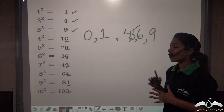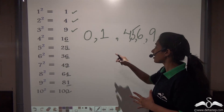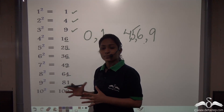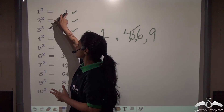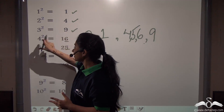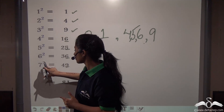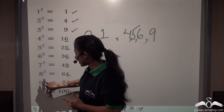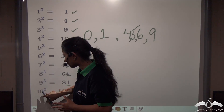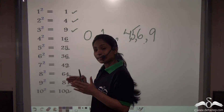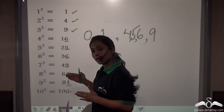We can say that all the square numbers, if they are perfect squares, they will have these digits only in their units digit. How can I say that? You know that maths has numbers 0 to 9, and all other numbers are combinations of these. So 1² = 1, 2² = 4, 3² = 9, 4² = 16, 5² = 25, 6² = 36, 7² = 49, 8² = 64, 9² = 81, and 10² = 100. Any combination of these numbers will have these digits only in their unit digits.